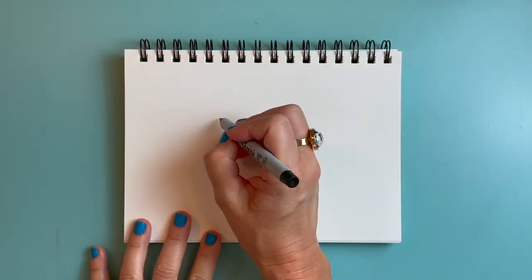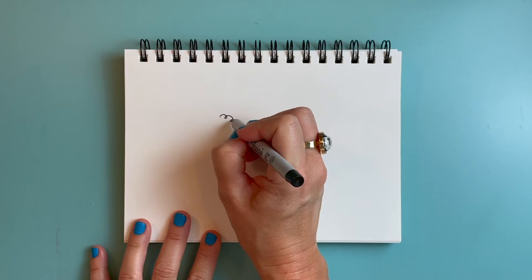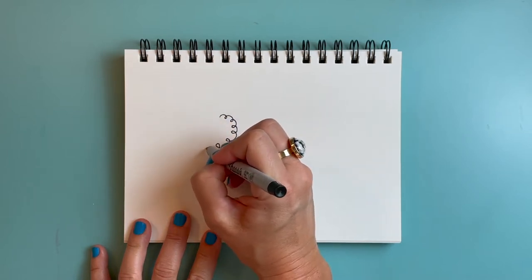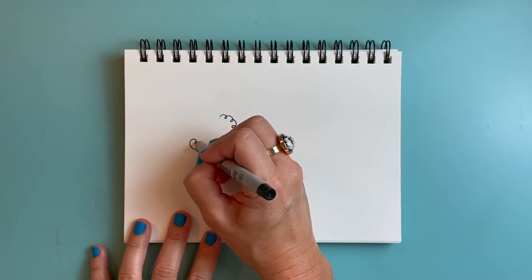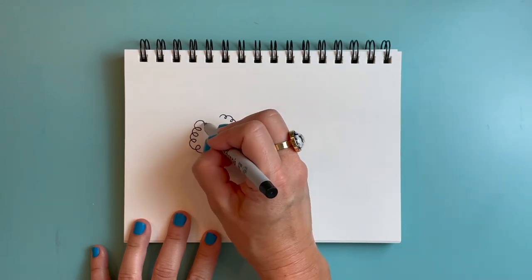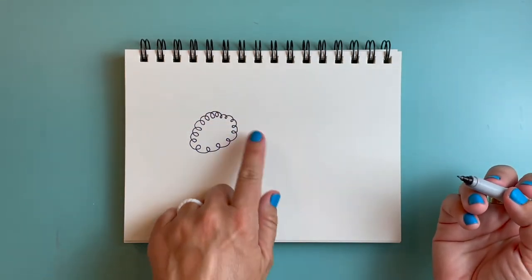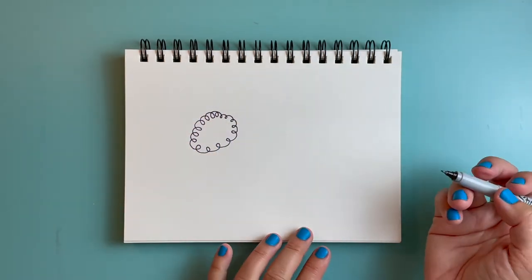I'm going to put one curly circle over here and it's about the size, a little bigger than a quarter, and it doesn't need to be perfect. That one's kind of more oval shaped. That's okay.